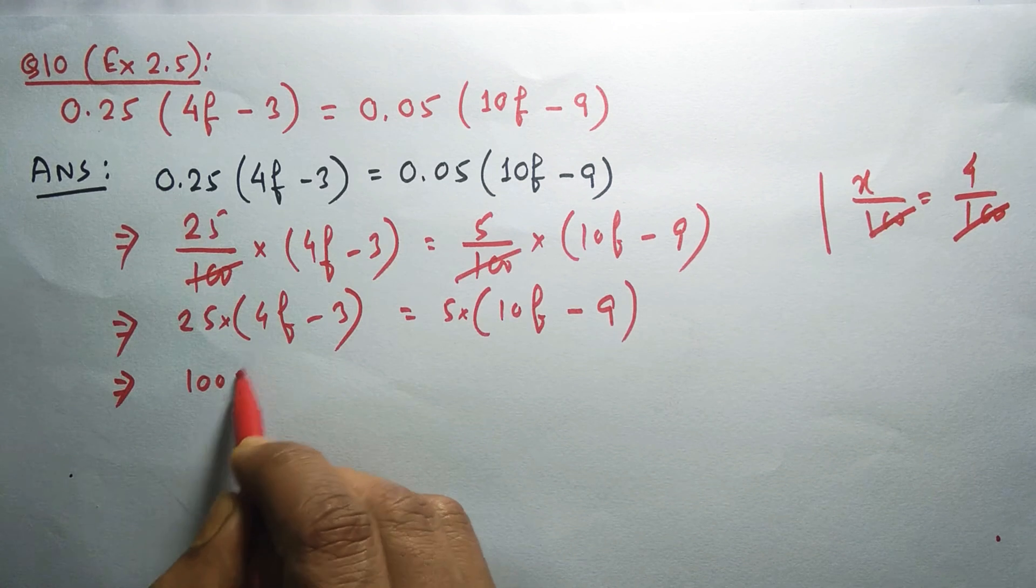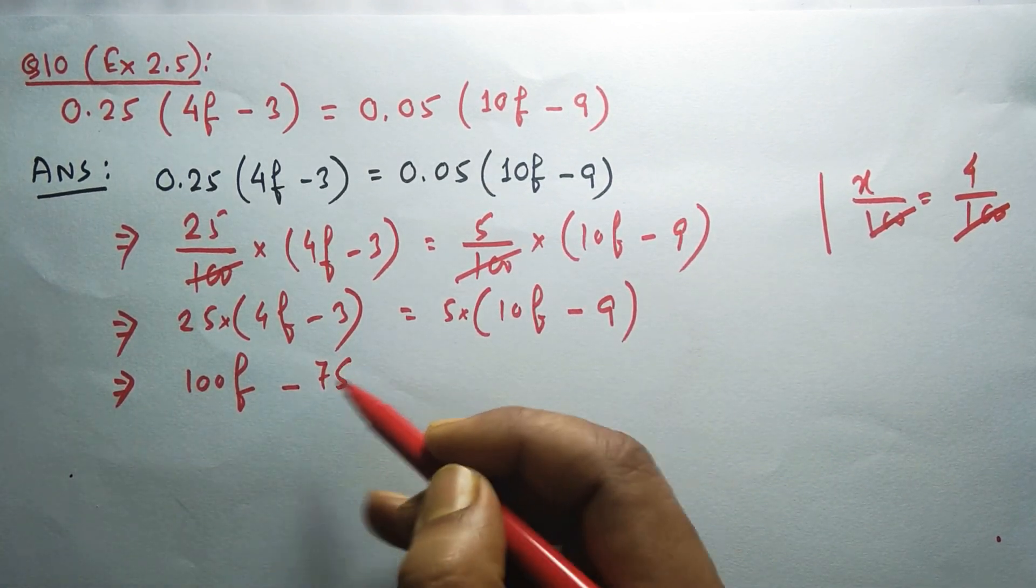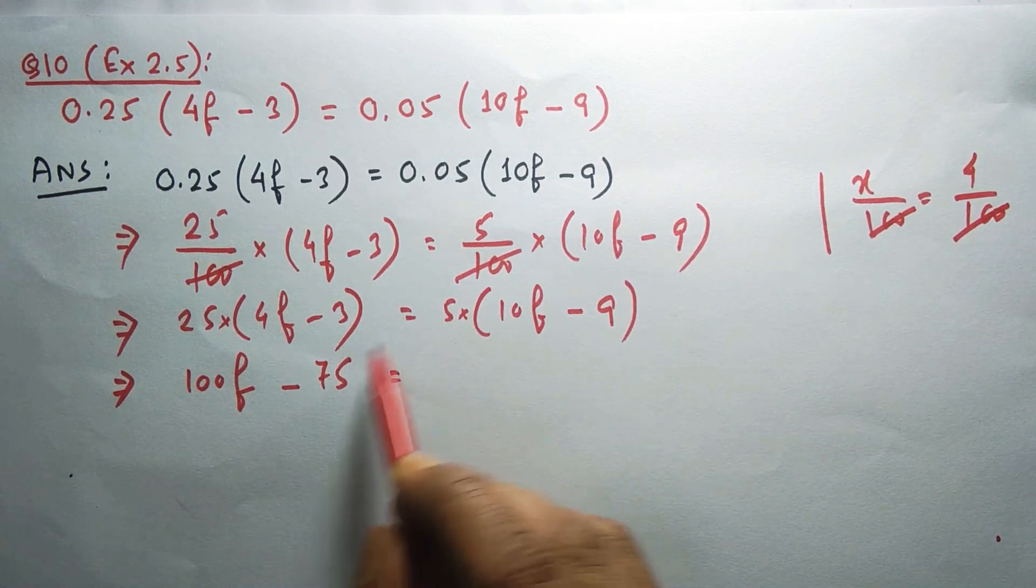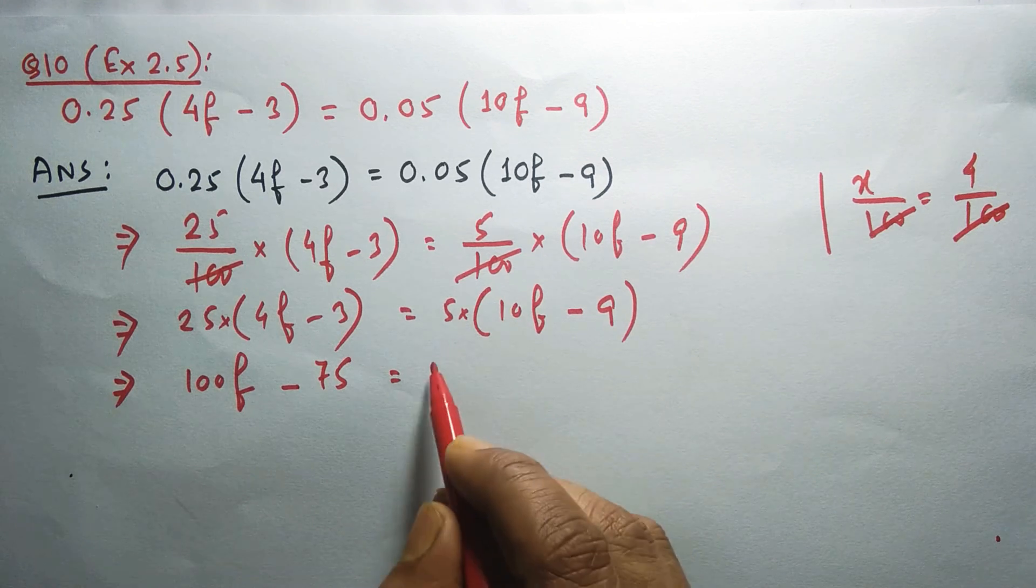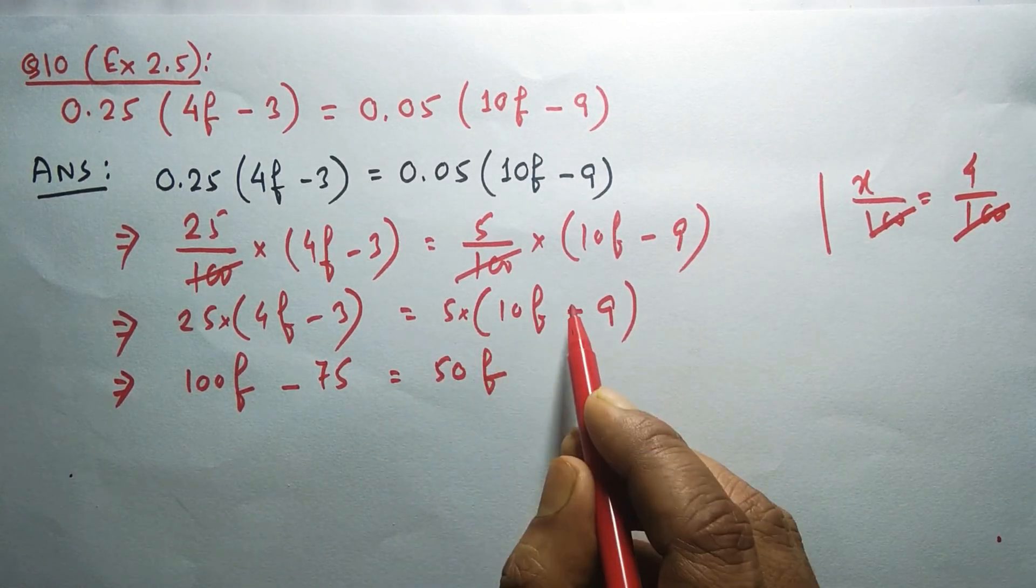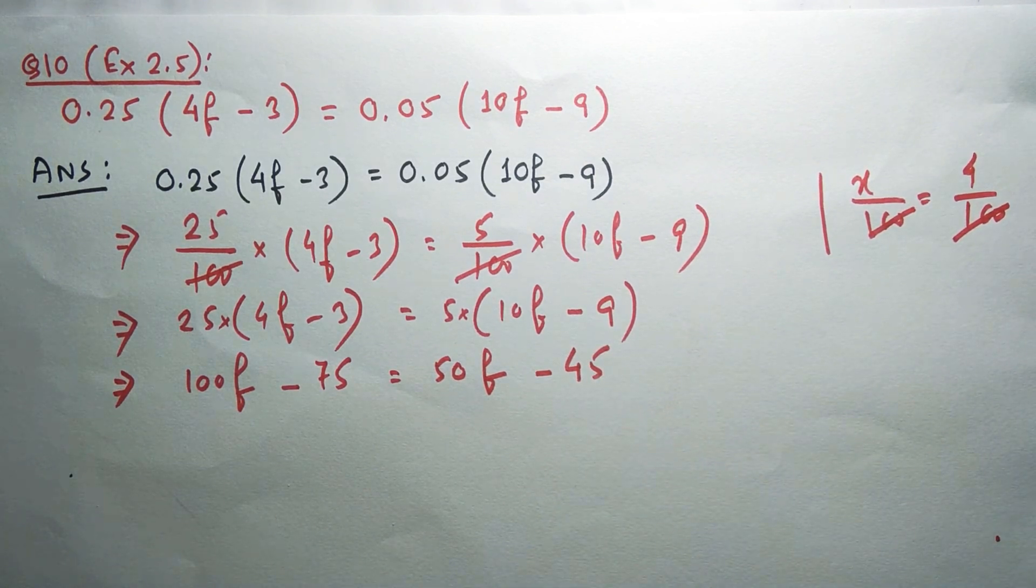25 into 4 will be 100f, plus minus minus, 25 into 3 is 75. This equals on the right, 5 times 10 is 50f, again plus minus minus, 5 times 9 is 45.